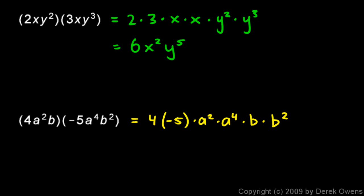And now I'll consolidate these pieces. The 4 times the negative 5 is a negative 20. And the a squared times a to the fourth is an a to the sixth. And the b times the b squared is a b cubed. So not too bad. And with a little bit of practice, you can take this intermediate step and do that in your head and go straight from here to here.